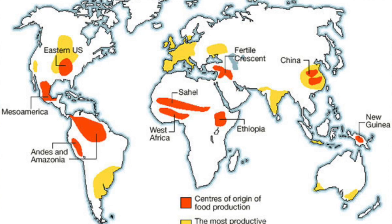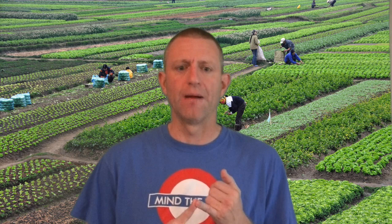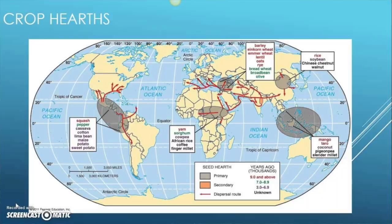In West Africa and North Africa, about 7,000 years ago, we see coffee, rice, sorghum, and yams. Then, very importantly, in the Western Hemisphere about 5,000 years ago, in Mesoamerica, we see things like corn (or maize), peppers, potatoes, and squash become domesticated.